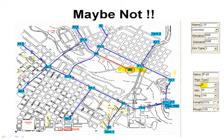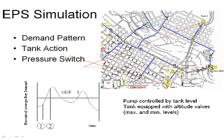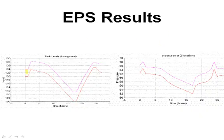An extended period simulation is like a 24-hour simulation where the demands in a typical utility will vary — high in the morning and high in the evening. Pumps may be controlled off of tanks, so there's a lot of flexibility when running a 24-hour simulation. These are easy to set up, and you can evaluate the conditions that exist in your utility.